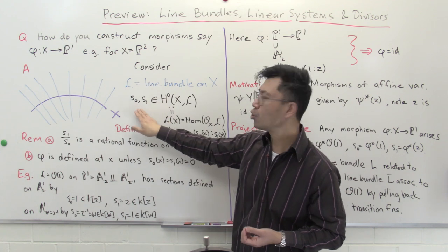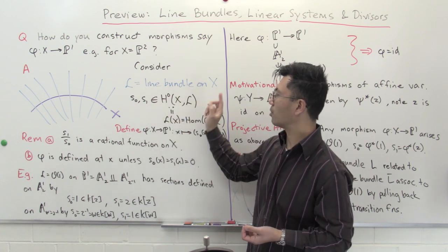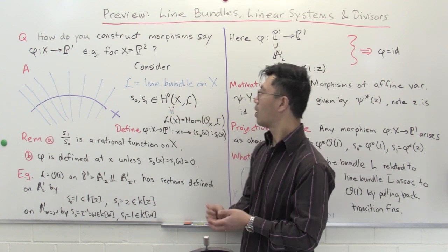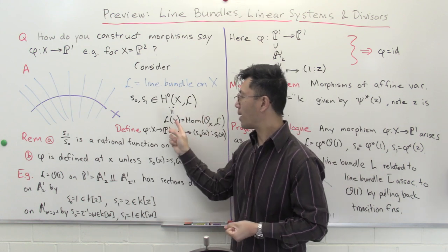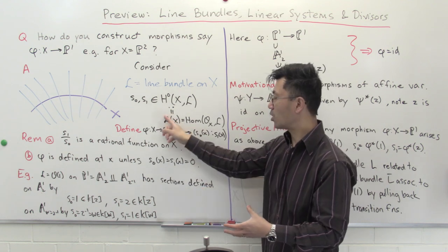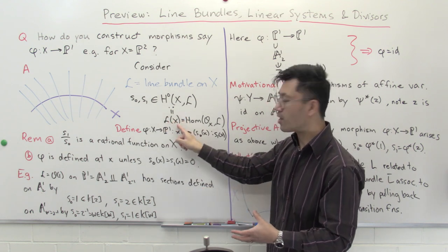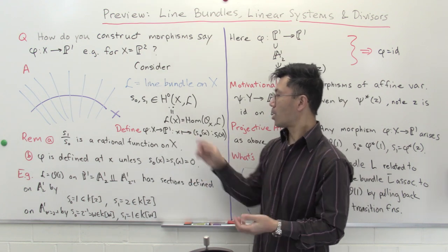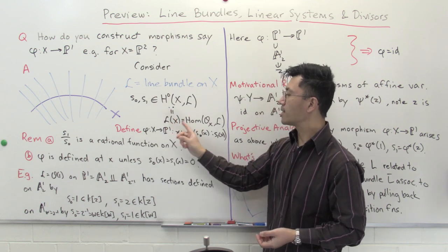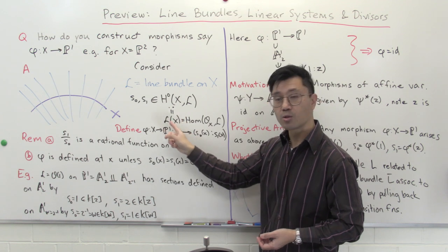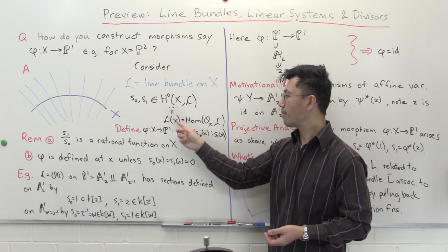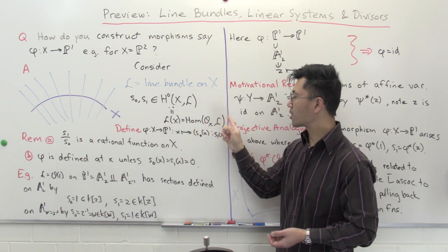We're going to pick two global sections of this line bundle. The notation for global sections of L over X is H⁰(X, L). A global section means you're looking at L not on some open set but on the whole of X. This turns out to be a vector space over your ground field k, and it equals the space of homomorphisms from the structure sheaf O_X to L.